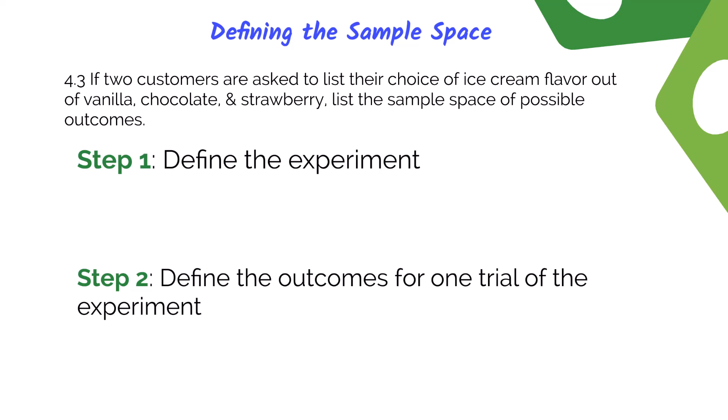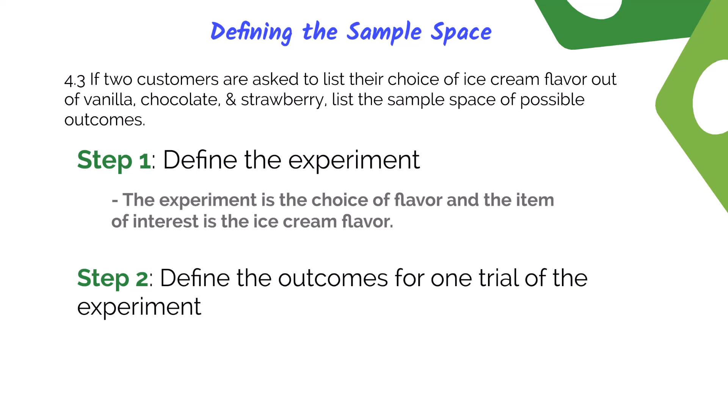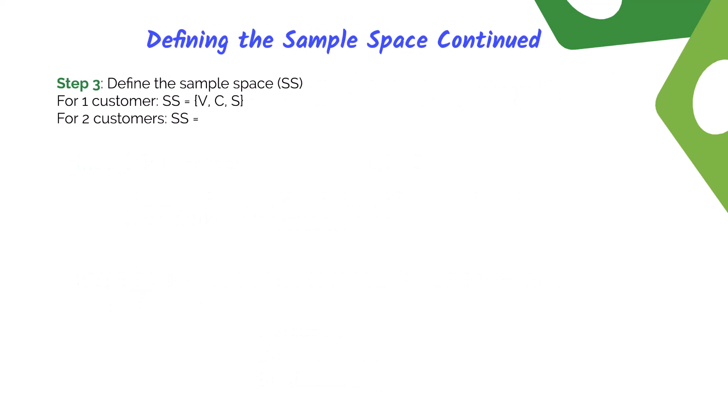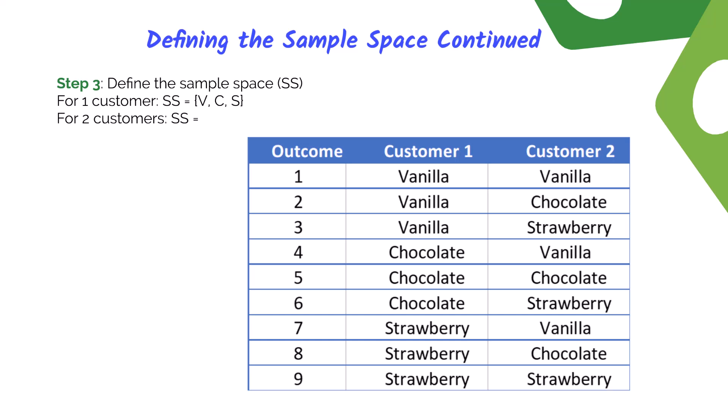Let's look at an example from the textbook. Problem 4.3 says: if two customers are asked to list their choice of ice cream flavors out of vanilla, chocolate, and strawberry, list the sample space of the possible outcomes. Our experiment is to find out the customer's choice of flavor. The possible outcomes for one customer are three flavors: V for vanilla, C for chocolate, and S for strawberry. For one customer, the sample space is V, C, S. Since we're interested in finding the sample space for two customers, we must expand our outcomes. Outcome one is where the first customer says vanilla and the second customer also says vanilla. The next outcome is the first customer says vanilla and the second customer says chocolate.